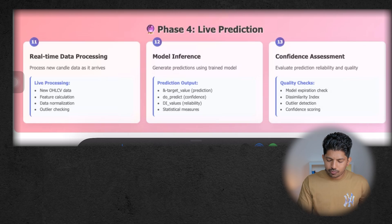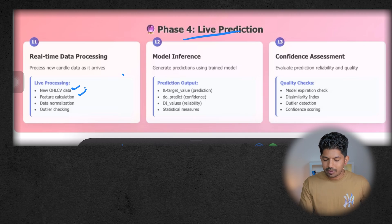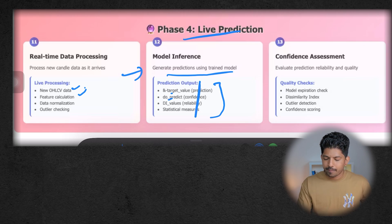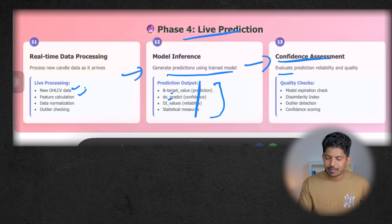The fourth phase is live prediction, in which we process new candles data as it arrives. We'll be having new OHLCV data, then we have to simultaneously calculate the features, normalize data, and also check for outliers. Then we have model inference, in which it will generate predictions using the trained model. These are very important parts: the target value, do_predict, DI values, and statistical measures. We will learn these. Then we have confidence assessment, which will evaluate the prediction reliability and quality—like we will check when the model can be expired, the dissimilarity index, outlier detection, and confidence scoring.